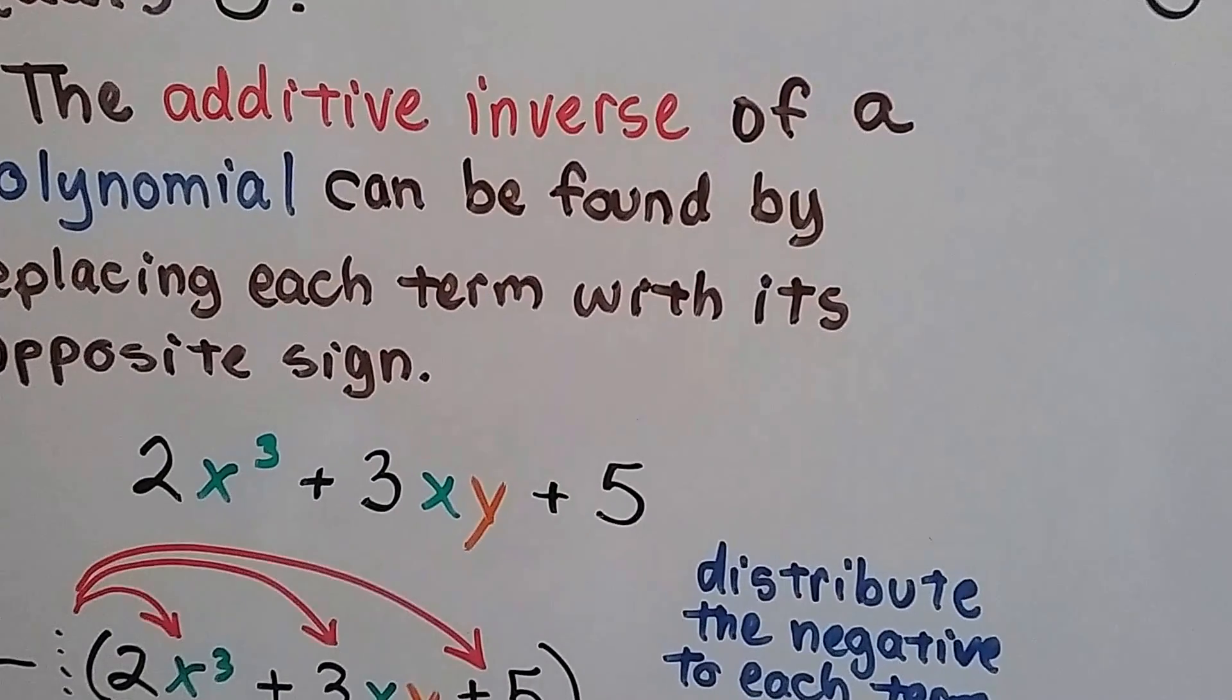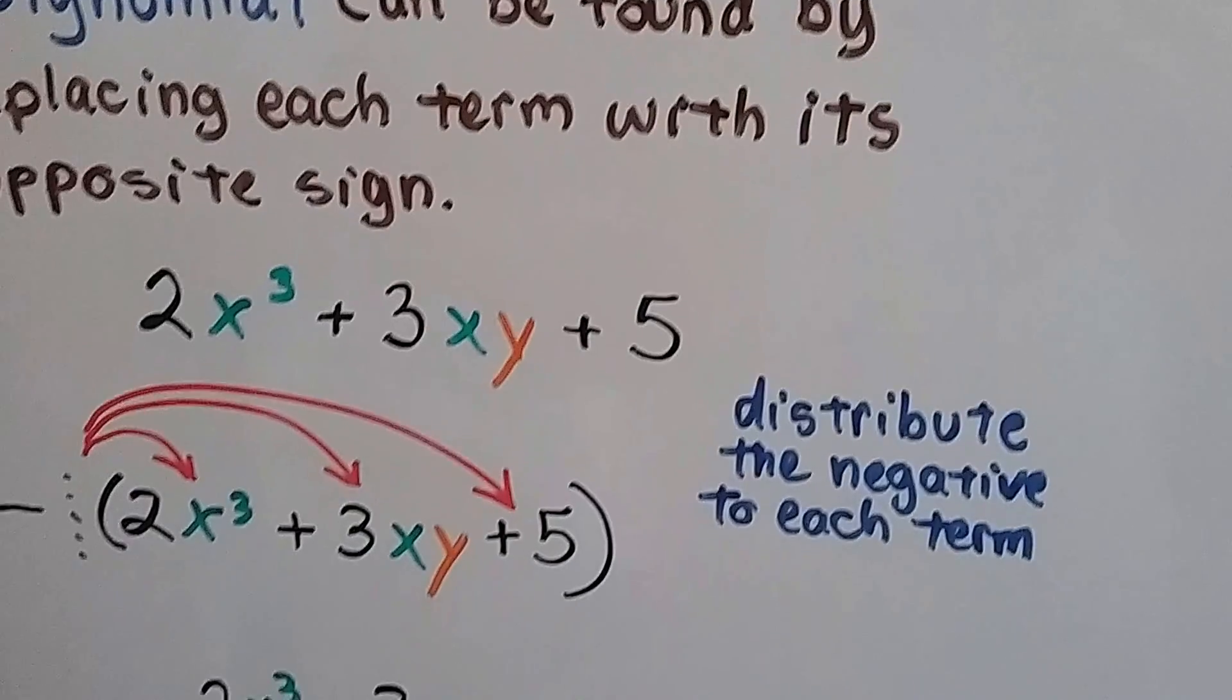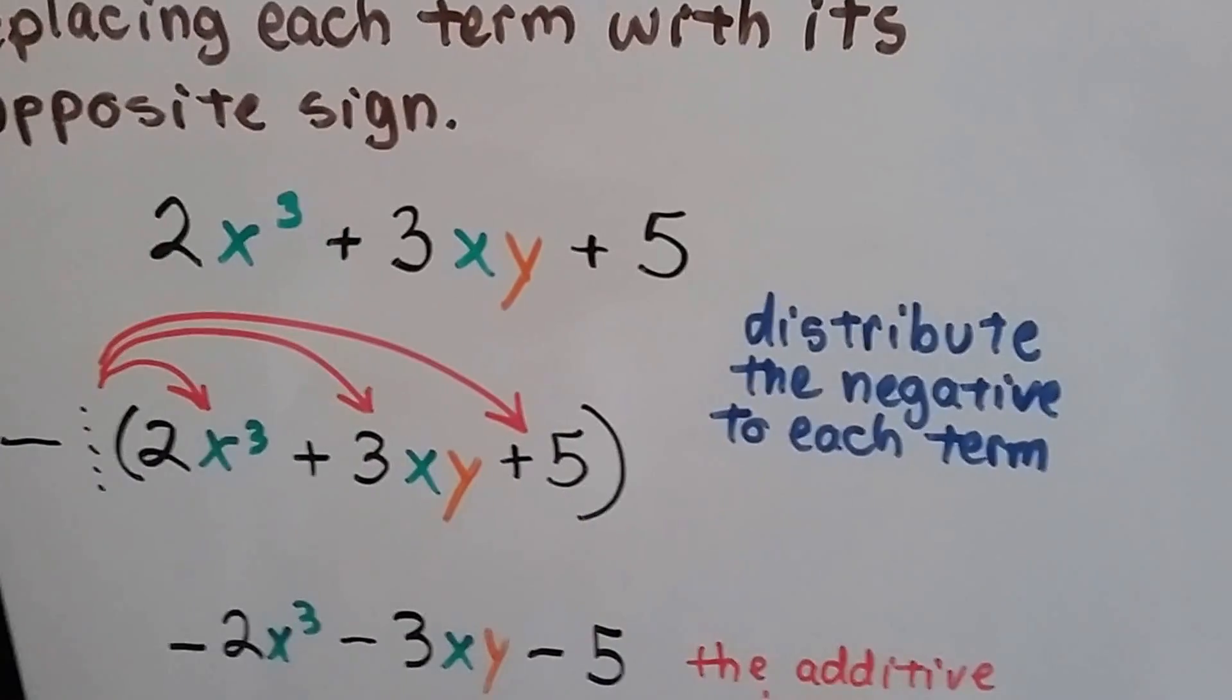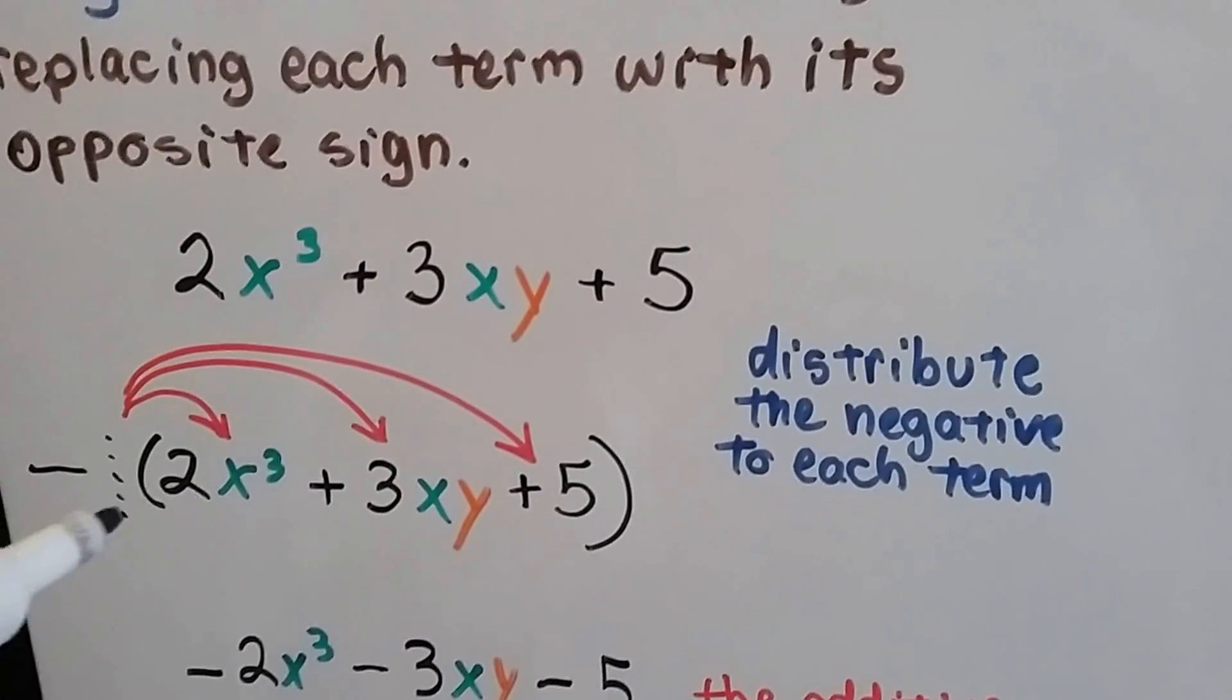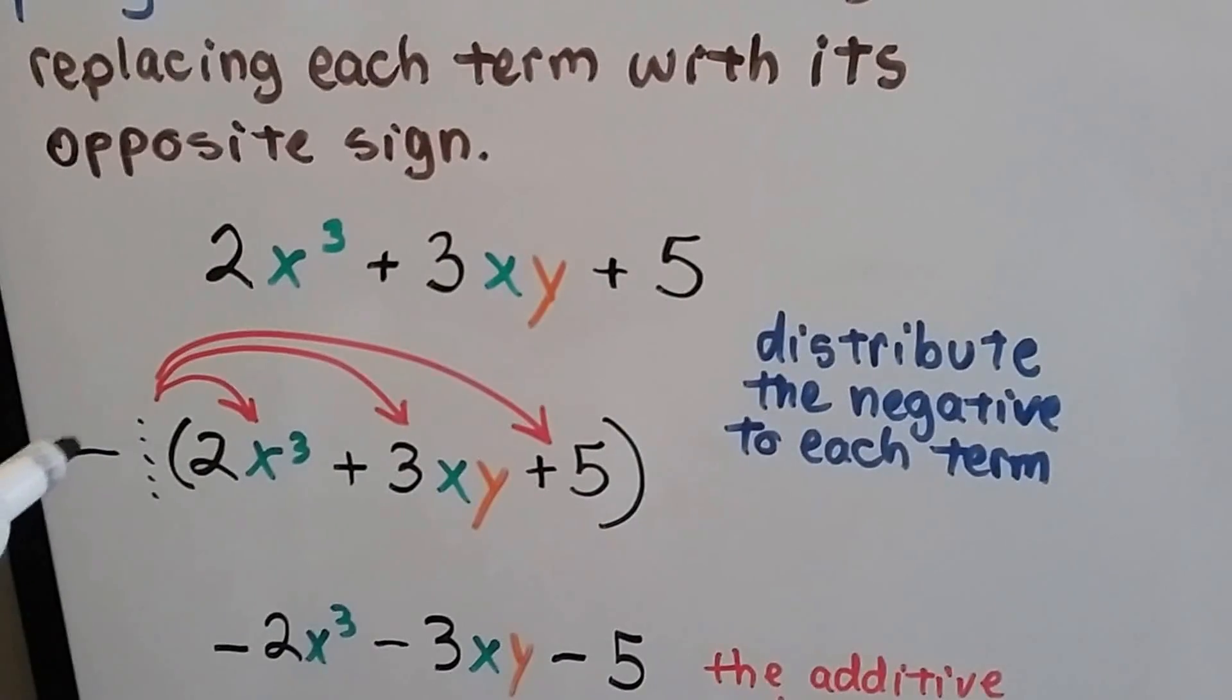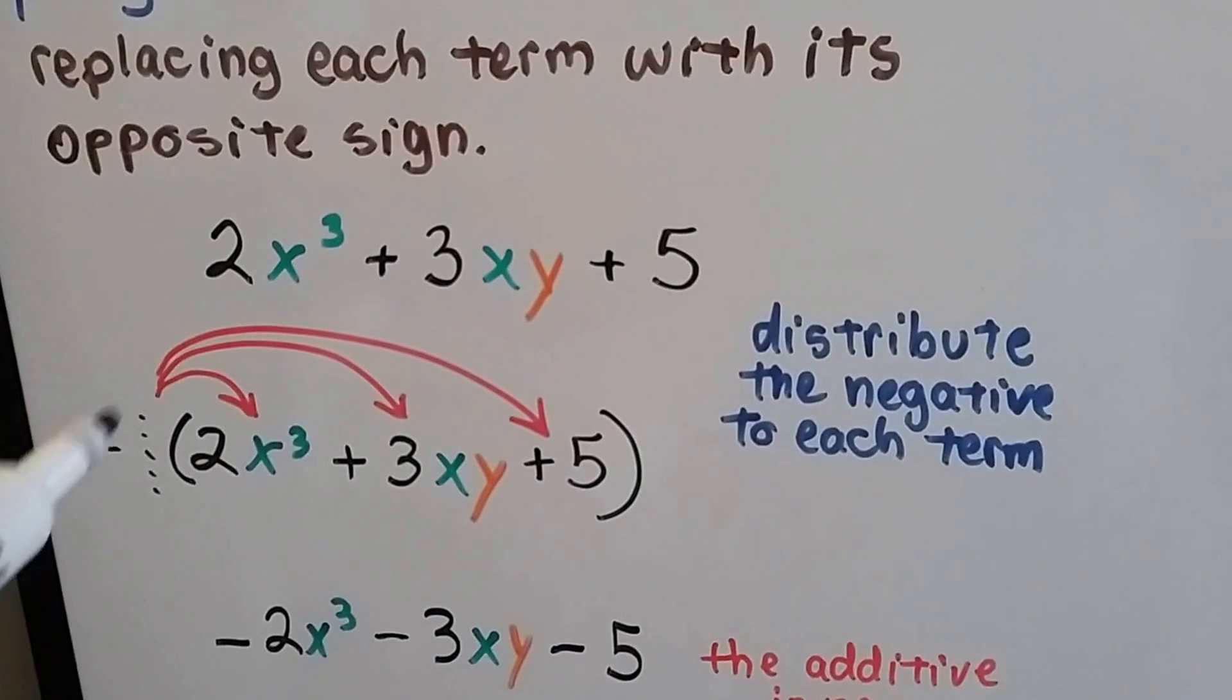We have 2x to the third power plus 3xy plus 5. What we can do is distribute a negative to each term. We have three terms here, separated by the plus signs or minus signs, but in this case, plus. We have a little invisible 1 here in between this minus sign and the parentheses, and we distribute this negative 1 to each term.